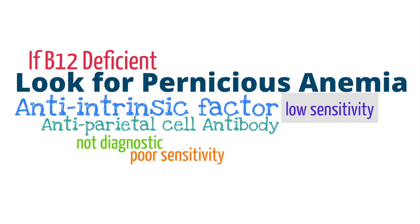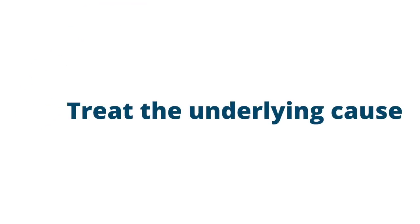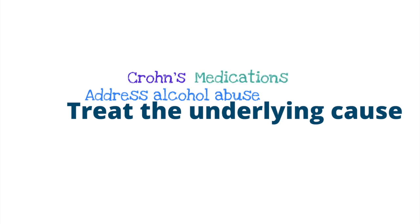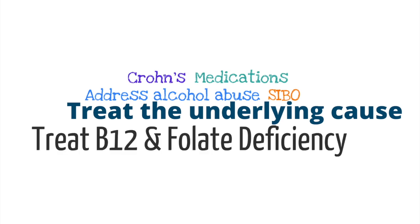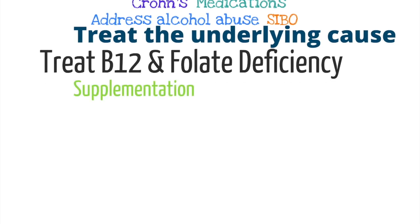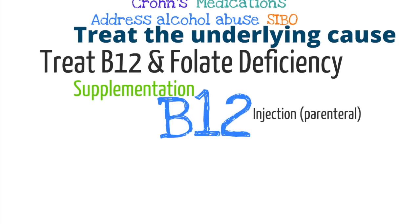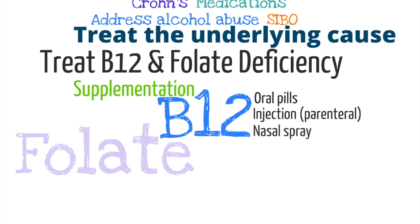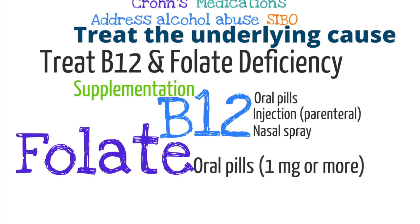Once a B12 or folate deficiency is recognized, it is important to treat the underlying cause if possible, for example, quitting the excessive use of alcohol or treating the underlying process like with Crohn's disease. In some cases, the underlying cause cannot be treated, so supplementation alone is needed. B12 deficiency can be treated either with injections of B12, high-dose B12 pills, or even a nasal spray for B12. Folate is supplemented with oral pills of one or more milligrams per day and can be given in an injection form as well.